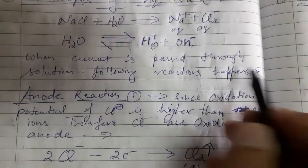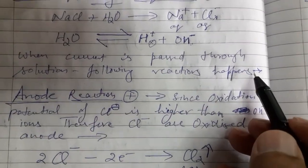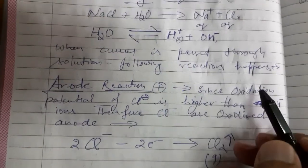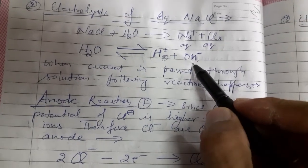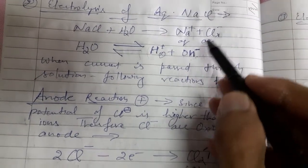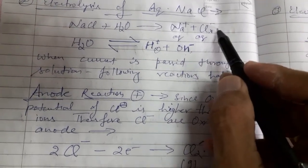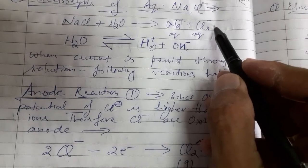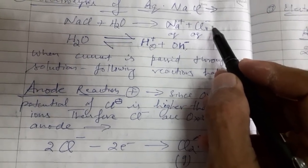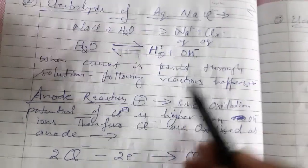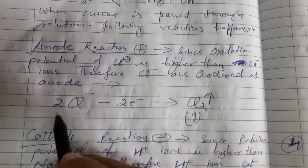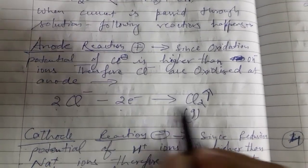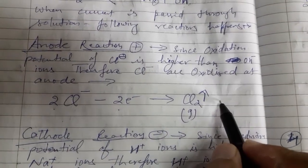When current is passed through the solution, the following reactions happen. At the anode, two types of negative ions will migrate: chloride and OH⁻ ions. But out of these two, chloride ions have higher oxidation potential — that is, a greater tendency to lose electrons. So at the anode, chloride ions get oxidized, lose electrons, and change into chlorine gas.